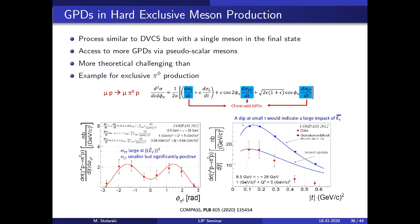We also measure exclusive rho-zero production and other vector mesons beyond DVCS. There is much more theoretical complexity here — some models describe the data and some upgraded models do not follow our data. New data will be needed to push the theory forward.